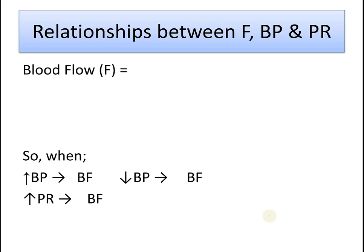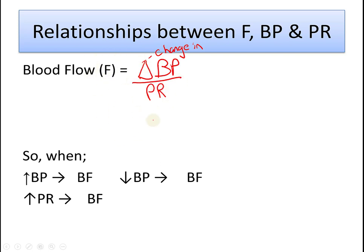How do these three terms help us understand blood flow? The best way to look at this is with a formula: blood flow equals delta blood pressure — delta is a Greek letter meaning change in — over peripheral resistance, F = ΔBP / PR. With a formula like this, you can put numbers in to see what happens.